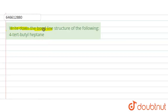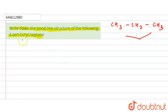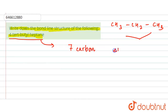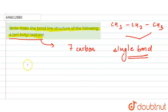Hi everyone. The question is: write down the bond line structure of the following — 4-tertiary butyl heptane. Heptane means a straight chain of seven carbons connected to each other by single bonds.